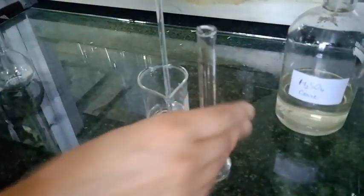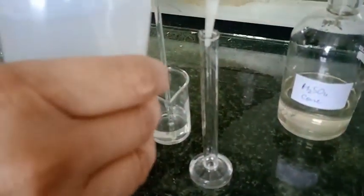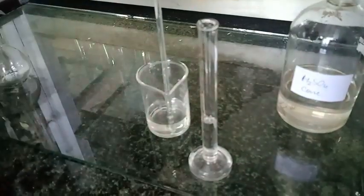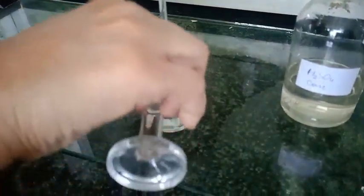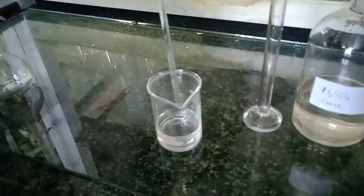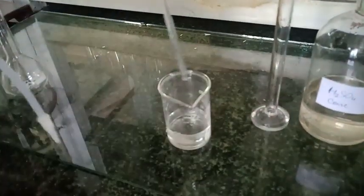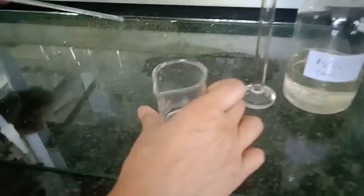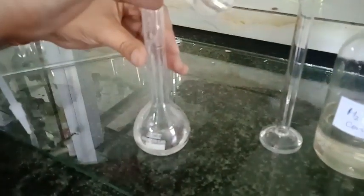Now I am going to rinse this measuring cylinder two to three times and add this rinsed water to the beaker. I am also going to wash this rod, and then transfer this water and sulfuric acid solution to the measuring flask to make it up to 100 ml.